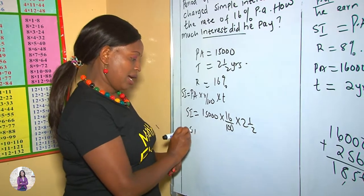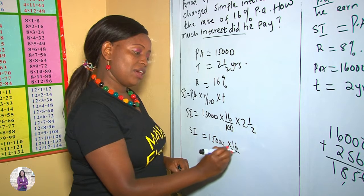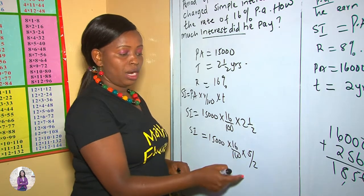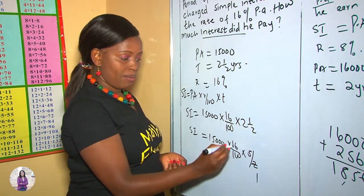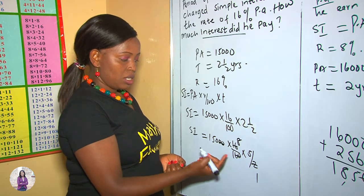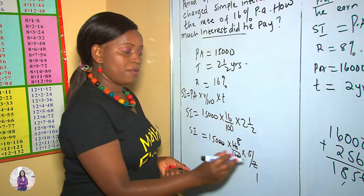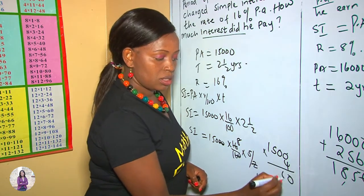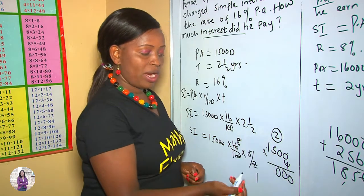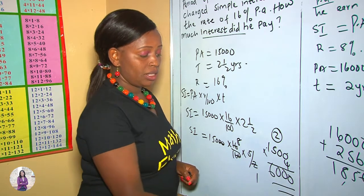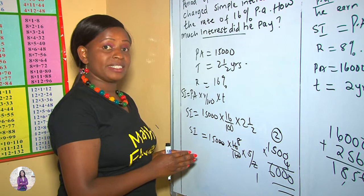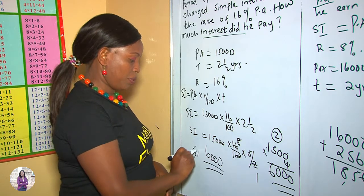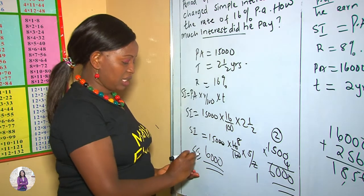SI equals 15,000 multiplied by 16 over 100, times two and a half years. We have to change two and a half years into an improper fraction: two times two is four, four plus one is five, so it becomes five over two. We then simplify: two zeros cancel, we get 8 times 5 is 40, times 1 gives 40, and 40 times the remaining factors gives us 6,000. Therefore the profit generated within two and a half years is six thousand. The simple interest is 6,000.